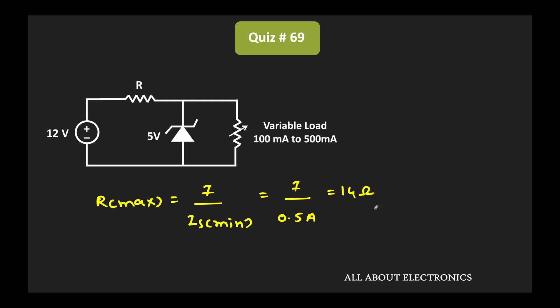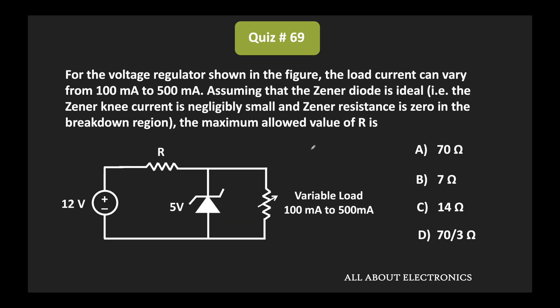That means as long as the value of R is less than 14 ohm, this circuit will be able to supply the required value of the load current. So we can say that the maximum allowed value of R is equal to 14 ohm, and hence for the given question, option C is the correct answer.